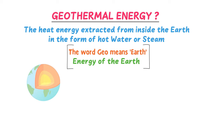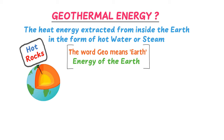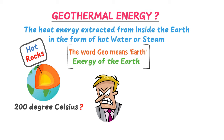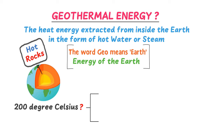The earth's core contains hot rocks in a molten or partly molten state. The temperature of these hot rocks is about 200 degrees Celsius or more. This is because heat is generated from the radioactive decay of minerals and continual heat loss from earth's formation.